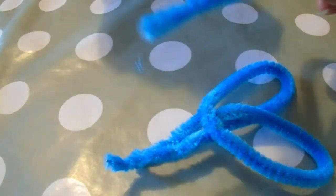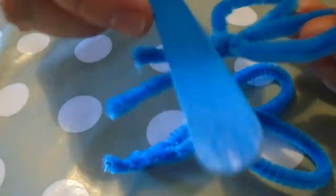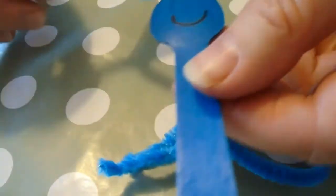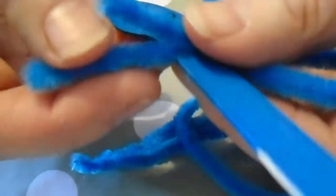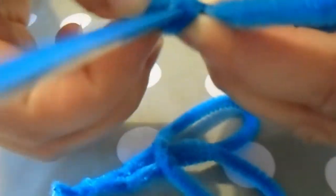And now this bit's quite important. You need this to attach to the body of your damselfly. So here's your damselfly. Now you take your wing and you wrap this part of the pipe cleaner around the body of the damselfly.